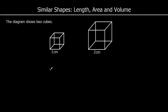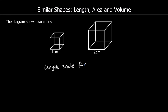So let's look at these two cubes. We've got a 1cm cube with a width of 1, a height of 1, and a depth of 1. And my 2cm cube has got a width of 2, a height of 2, and a depth of 2. So the length scale factor we can see is 2 — to get from 1 to 2, you multiply by 2.